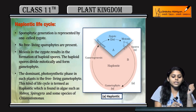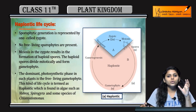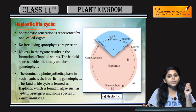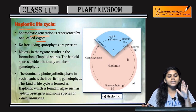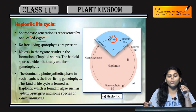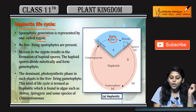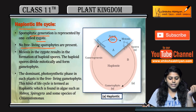First of all, we will study the haploid life cycle. The sporophytic generation is represented by one-celled zygote. Remember, zygote is always diploid in nature — it is of the form 2N. No free-living sporophyte are present.